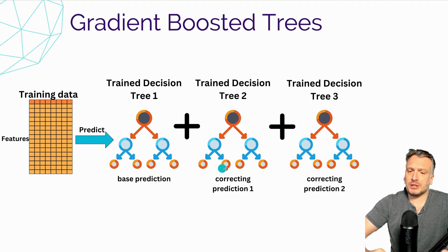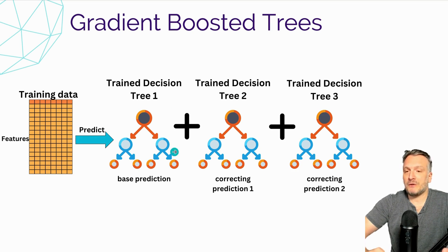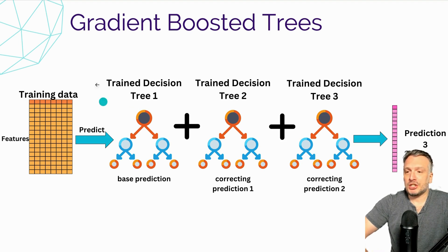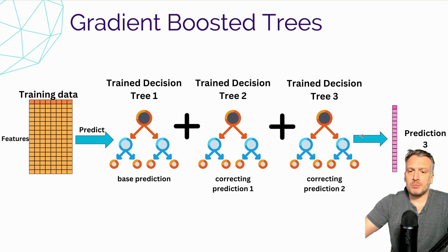The first correcting tree predicts the first correcting predictions and the second correcting tree predicts the second correcting predictions. We have added two correcting trees that correct the predictions the base tree is making. When we inject the training data into this ensemble of trees, we get another set of predictions. Every time we correct the initial tree, we improve the predictions by adding more and more trees.